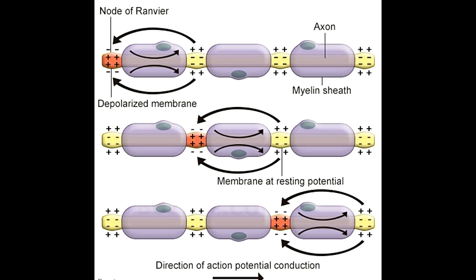In case the axon was a straight tube without myelin, the impulse would have to depolarize every set of ions without any scope to hop, thus making the process slow. This is what happens in diseases like multiple sclerosis, neuromyelitis optica, transverse myelitis, and other neurodegenerative autoimmune diseases.